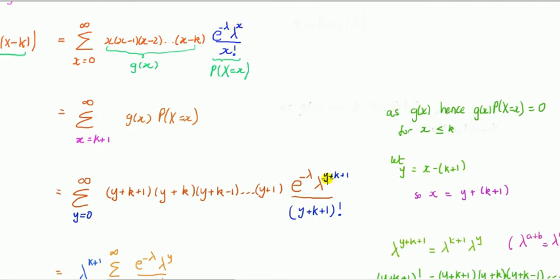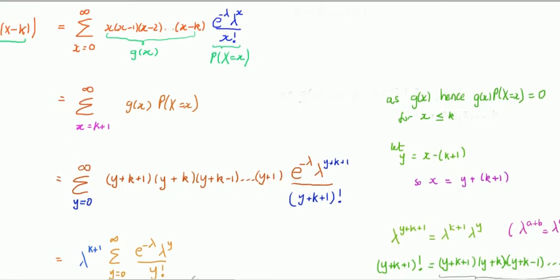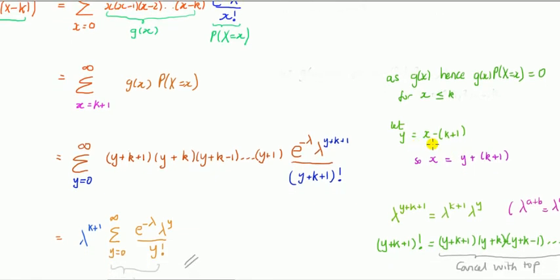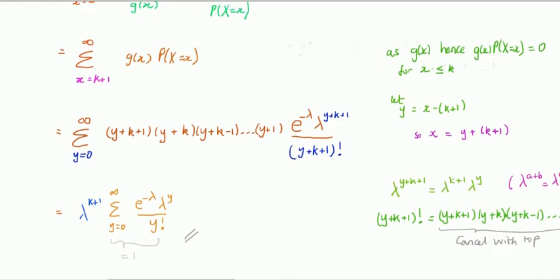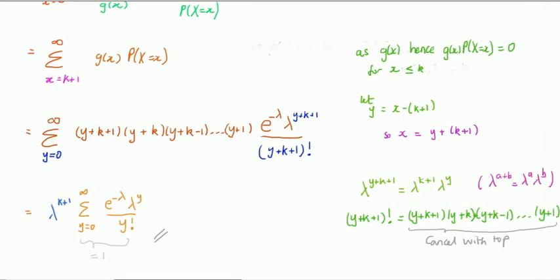There's a common factor of lambda^(k+1), so I pull that out — shown in blue — and then you're left with the sum of a probability mass function for a random variable y, where y is Poisson with rate parameter lambda. By the property of a probability mass function, the sum over all its possible values is 1. So we're done — the factorial moment equals lambda^(k+1).